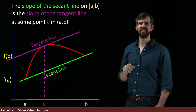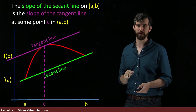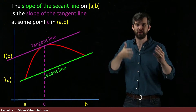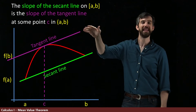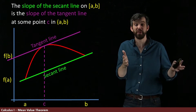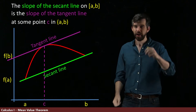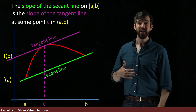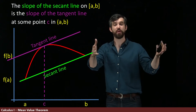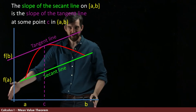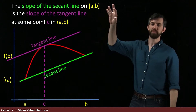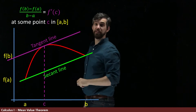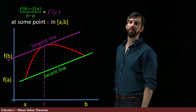That's the idea qualitatively, but let's come up with precise formulas. The slope of the tangent line is easy — that's the definition of the derivative, so it can simply be replaced with f'(c). As for the slope of the secant line, we use rise over run: that's (f(b) − f(a)) divided by (b − a). So the claim is that (f(b) − f(a)) / (b − a) = f'(c).